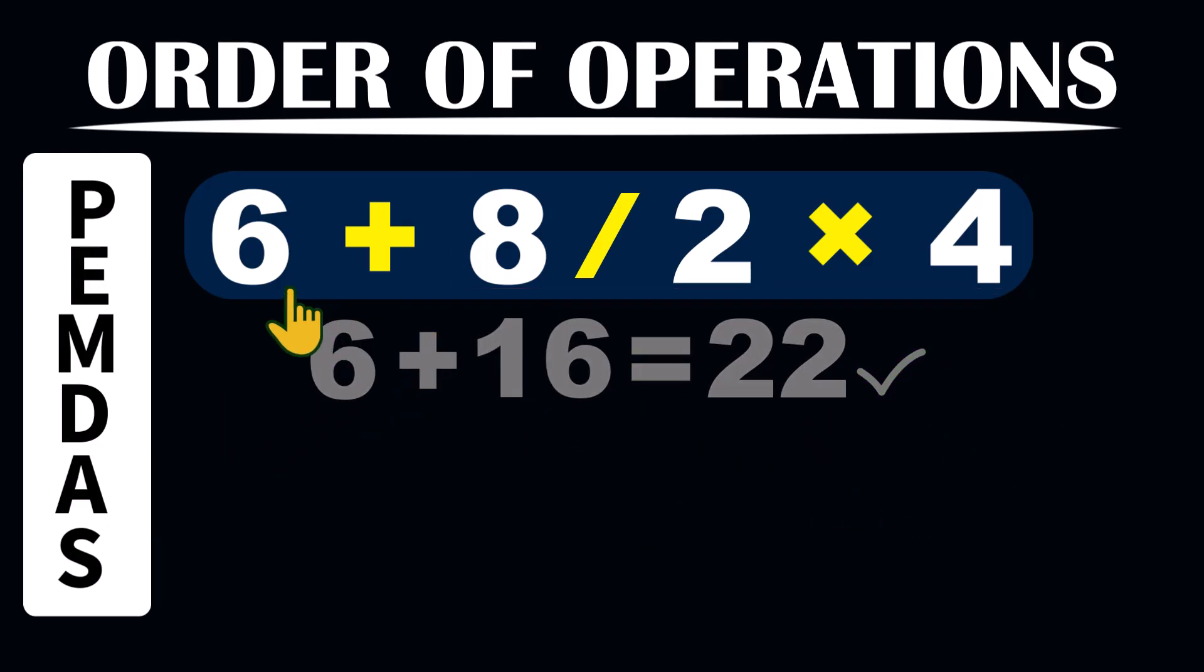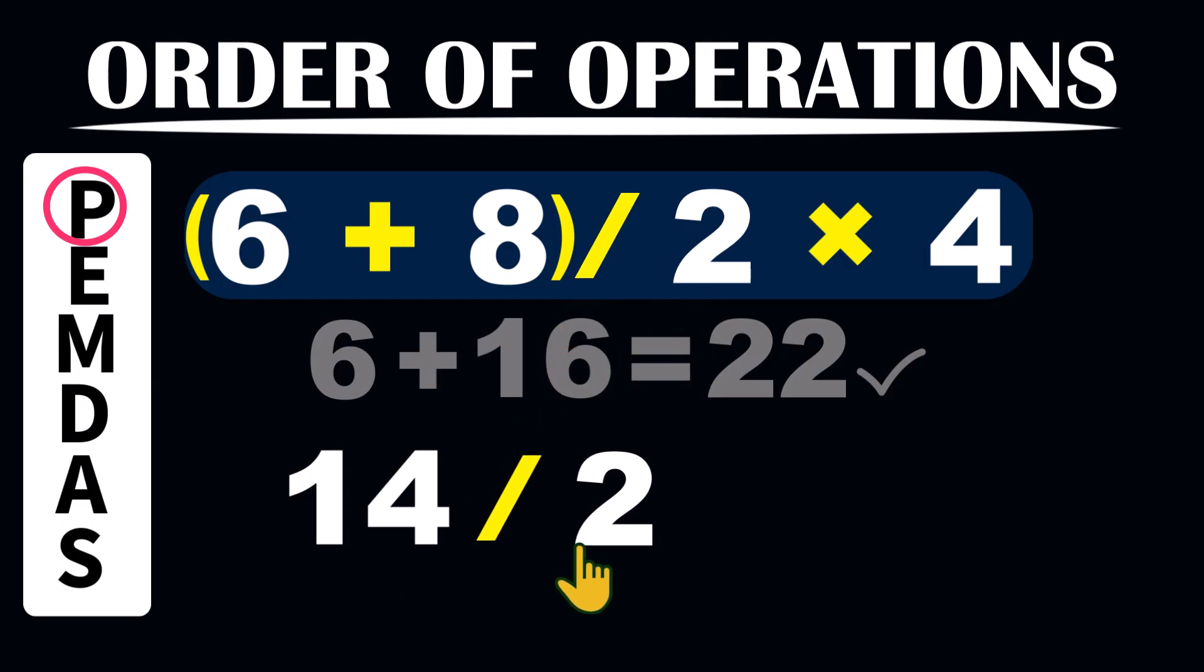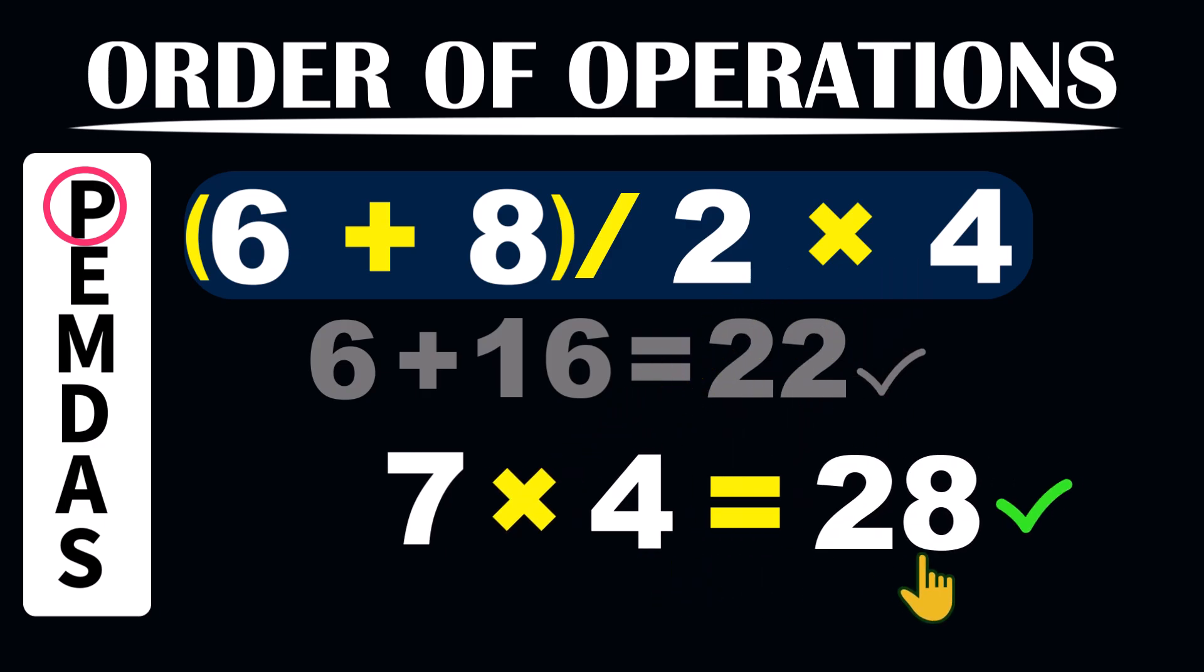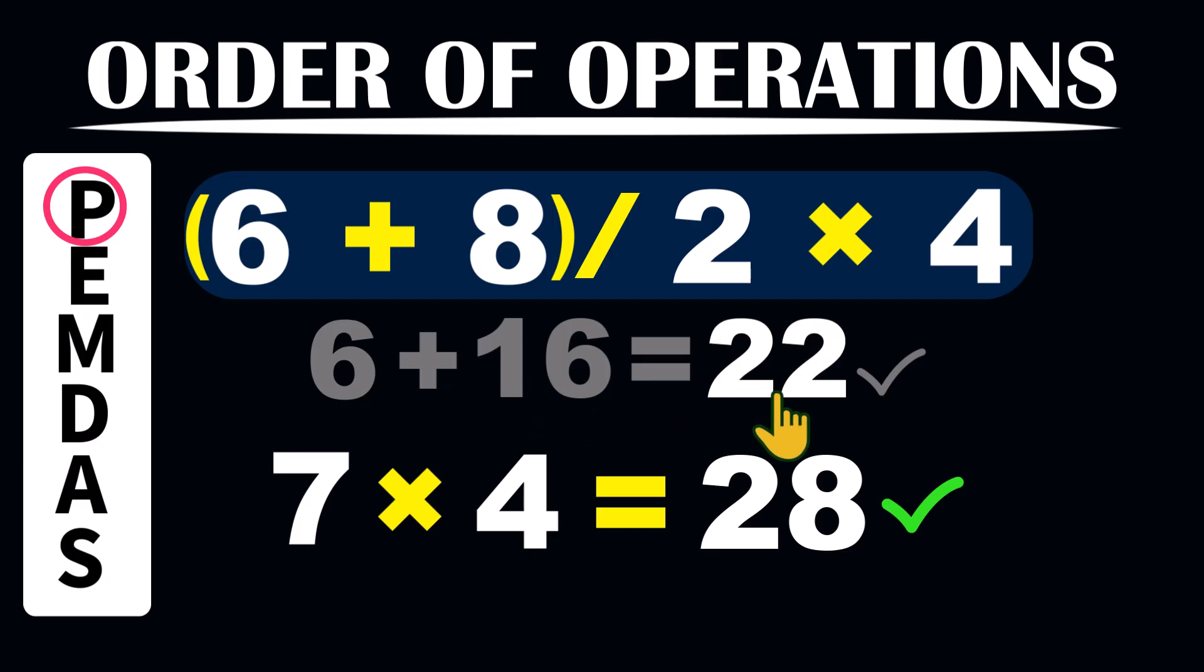But, can you force this calculation to do the addition of 6 and 8 first, before 8 is divided by 2? The answer is yes. All you have to do is enclose 6 plus 8 in a parenthesis, like so. So, according to the PEMDAS order of operations, anything inside the parenthesis must be done first. So, here, we have to add 6 and 8 first. That gives us 14. Then 14 is divided by 2. We get 7. That is finally multiplied by 4 to get a final result of 28, which is different from the result we got when there was no parenthesis.